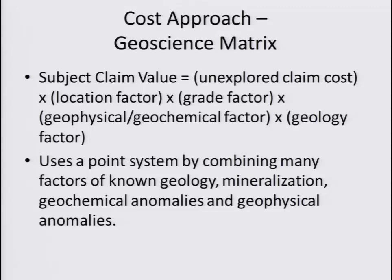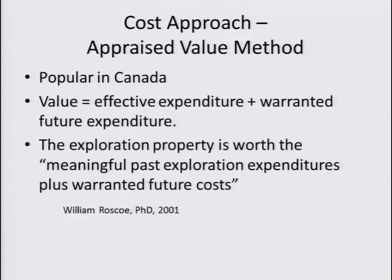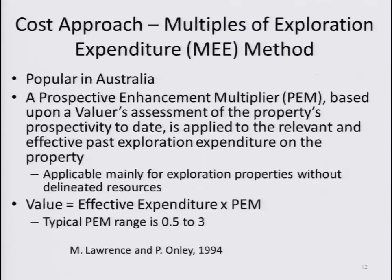Another approach is the MEE method — the multiples of exploration expenditure method. It's very popular in Australia. The prospective enhancement multiplier, or PEM, is based on the valuer's assessment of the property's prospectivity and is applied to relevant past exploration expenditure on the property. The PEM range is from 0.5 to 3, giving a factor of up to three times the property value or as low as 0.5.